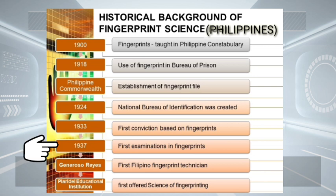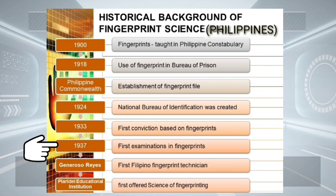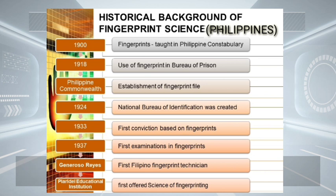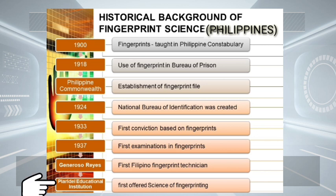In 1937, Captain Thomas Dugan of the New York City Police Department and Mr. Flaviano Herrero of the Federal Bureau of Investigation in Washington DC were the ones who gave the first examination of fingerprints. Mr. Generoso Reyes was the first Filipino fingerprint technician employed by the Philippine Constabulary. Likewise, the science of fingerprinting was first offered as a subject in the Philippines through the efforts of the Plaridel Educational Institution, now known as the PCCR or the Philippine College of Criminology.